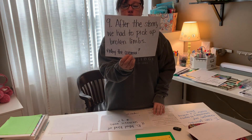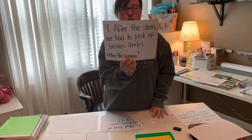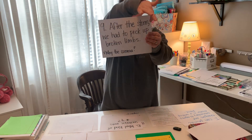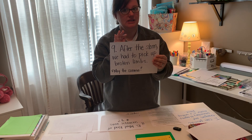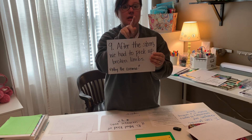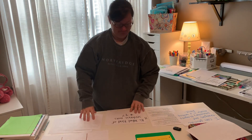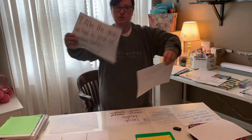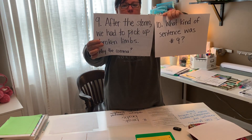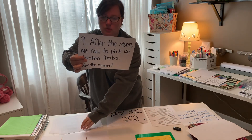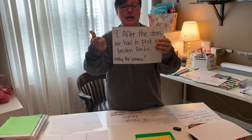Number nine: 'After the storm, we had to pick up broken limbs.' I want to know what's the purpose of that comma — and don't just put 'introductory element.' There are many introductory elements we have to consider, so be more specific. I want to know exactly why that comma is there. Number ten: What kind of sentence is number nine — 'After the storm, we had to pick up broken limbs'? Is it a simple sentence, a compound sentence, or a complex sentence? Put your answer next to number ten.